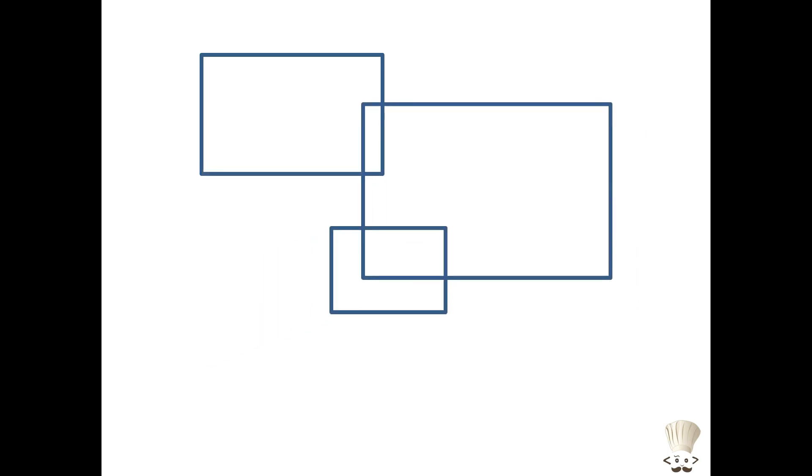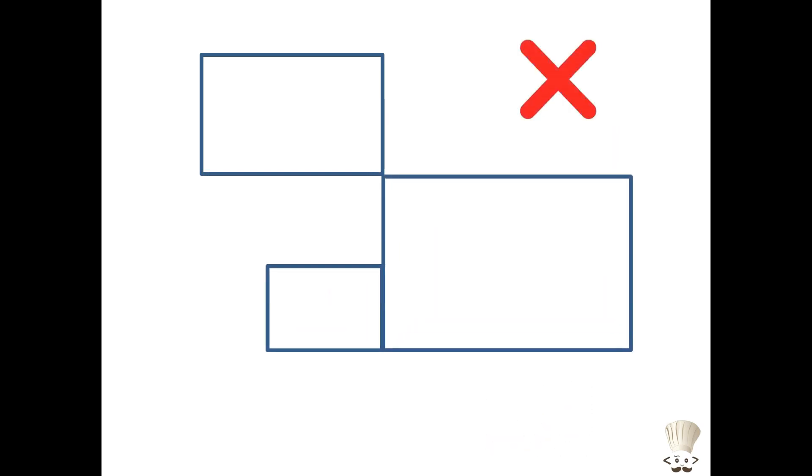Now the question says that there are n number of axis parallel rectangles on 2D Cartesian plane. Wait, what are axis parallel rectangles? They are nothing but rectangles having parallel vertical edges as well as horizontal edges, and it's also given that this rectangle may overlap or the edges might intersect, but vertices of each rectangle are distinct. It means no two or more rectangles have same vertex.